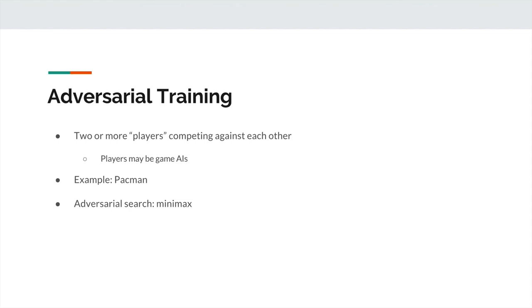The point of adversarial training is that you have two different components or players trying to compete against each other, and really interesting things happen. You can analyze this using game theory, which is actually what GANs do a little bit. With GANs, there is an adversarial component: you have this thing called a generator and this thing called a discriminator, and they're going to be competing against each other — so these two are adversaries. We're going to see very soon how all these different components come together to work in tandem.